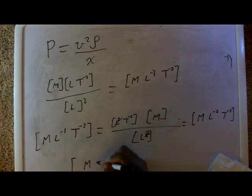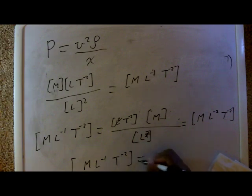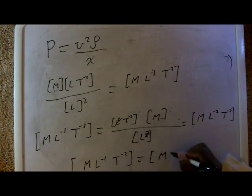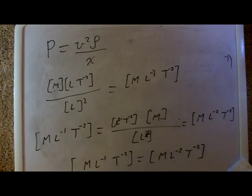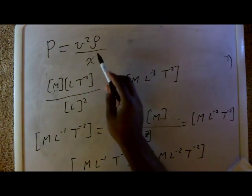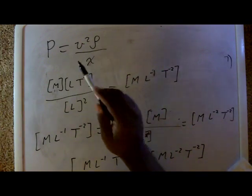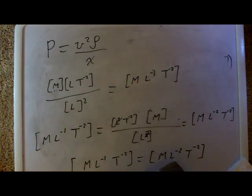So to rewrite it again, this is the pressure is equal to this. Now you see it's close, but they're not the same. This one has only one length in the denominator, and this one has two lengths in the denominator. Everything else is the same. So it's close, but pressure is not equal to this. It's close, but they're not equal. So this one is not equal.